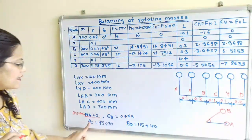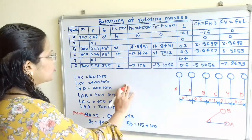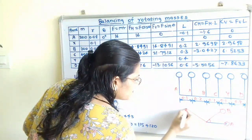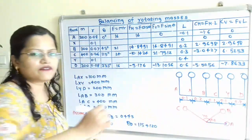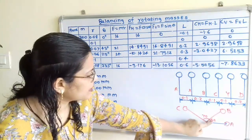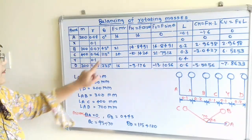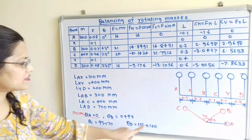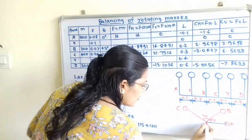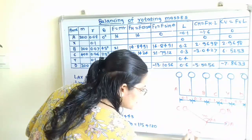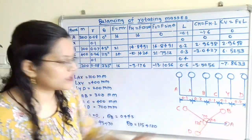The angle between B and C is given as 70°. So from B it is 70°, meaning the angle for C from A is 70 + 45 = 115°. Now for D, the angle between C and D is mentioned as 120°. So again we take the total angle from A, which is 115 + 120 = 235°. We have to mention these total cumulative angles from A in our table.